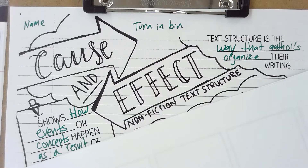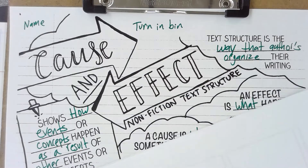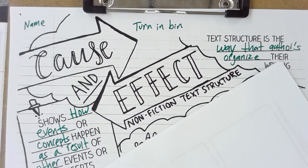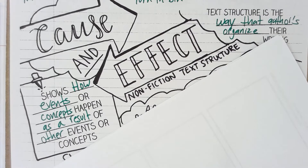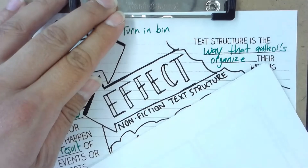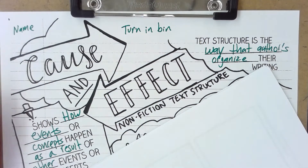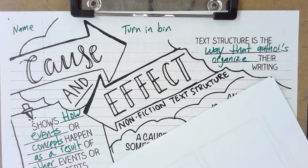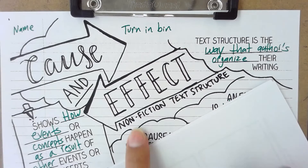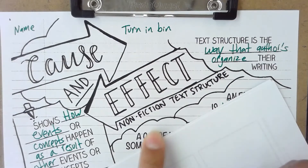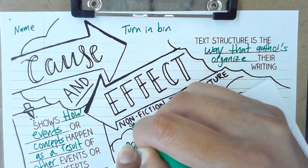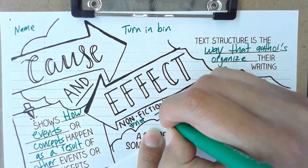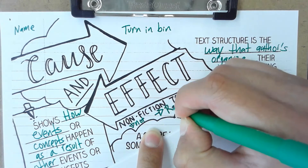Cause and effect shows how events or concepts happen as a result of other events or concepts. A text structure is the way that authors organize their writing. This is a nonfiction text structure — remember, this has to do with a text that is real. Non means not fiction, so it is real.